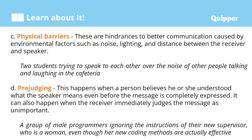For example, a group of male programmers ignoring the instructions of their new supervisor who is a woman, even though her new coding methods are actually effective. The disparity here is that since they are all male and their new supervisor is a woman, their prejudgment causes them to ignore her instructions simply because she is a woman — even though her methods are more effective than what they have been doing. So prejudging becomes a barrier in communication when there is already judgment before the completion of the expression of the message.